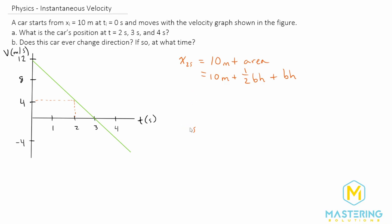Let me erase these just so we have a little bit more space. So now when we plug in the numbers, we have 10 meters plus one-half, and the base of the triangle is 2 seconds, and then the height of the triangle is from 4 to 12, so we have 8 meters per second there.